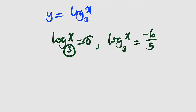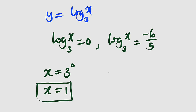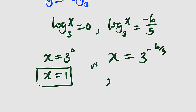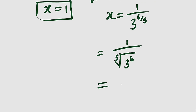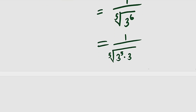For y = 0: log₃x = 0 means x = 3⁰ = 1. For y = −6/5: log₃x = −6/5 means x = 3^(−6/5) = 1/3^(6/5). Simplifying: 3^(6/5) = ⁵√(3⁶) = ⁵√(3⁵·3) = 3·⁵√3. So x = 1/(3·⁵√3).